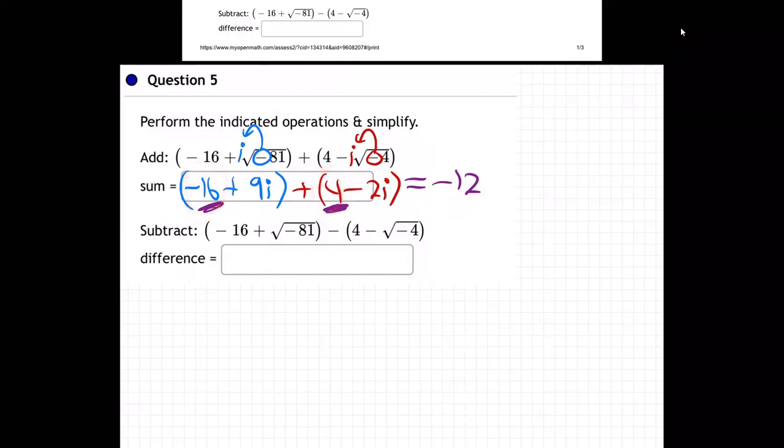you lost 12 pounds. Tracking with me, right? Gains and losses, and now the 9i, and the takeaway 2i is plus 7i. So there's the answer to the first part.